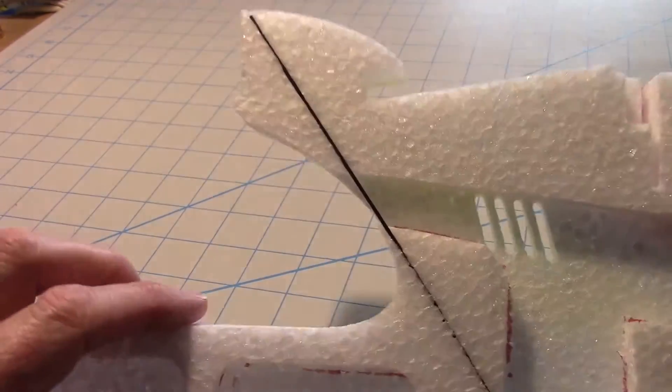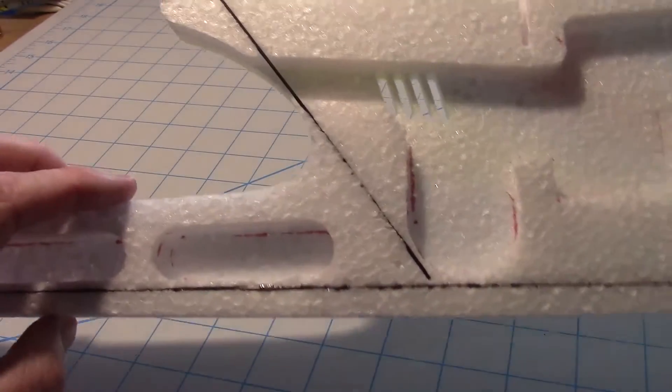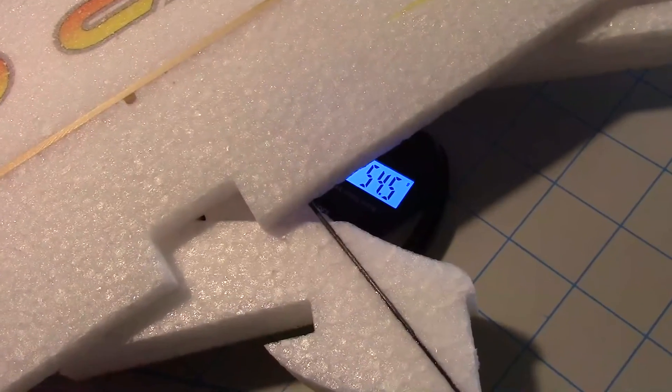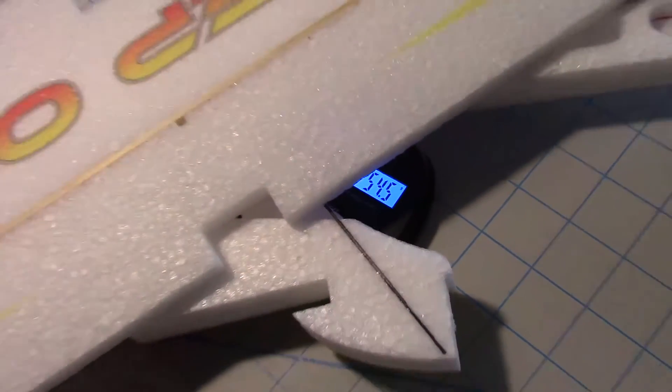Now we've got that type of situation. I know this adds a little bit of weight, like a gram and a half or something, but I think it's worth it. The fuse and the wing together right now are 54.5 grams.